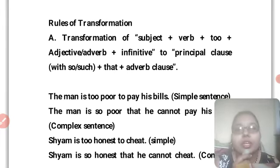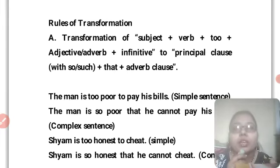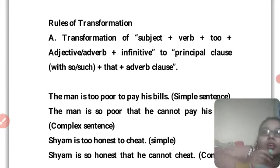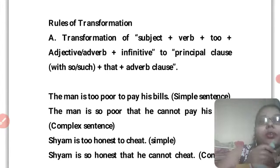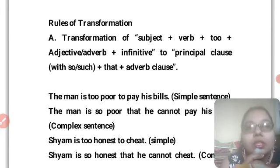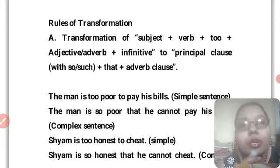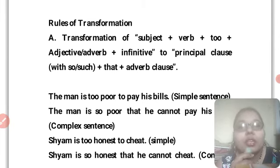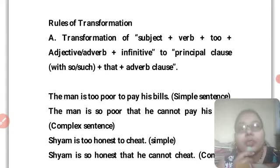Here we will see the rules: first we write the subject, then the verb, then we use 'to', then adjective or adverb, then the infinitive. We can use principle clauses with 'or', 'so', or 'much'. We can also use an adverb clause.